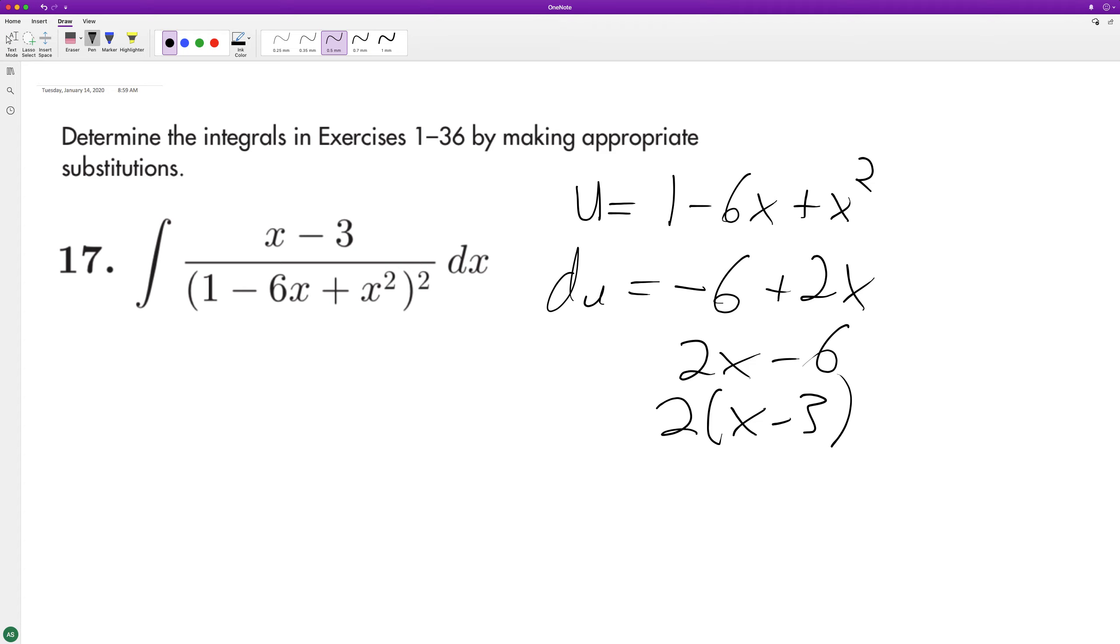So next, in order to get du equal to dx, we need to multiply du by 1 half. So ultimately we have 1 half because it's only x minus 3, it's not 2 times the quantity x minus 3.